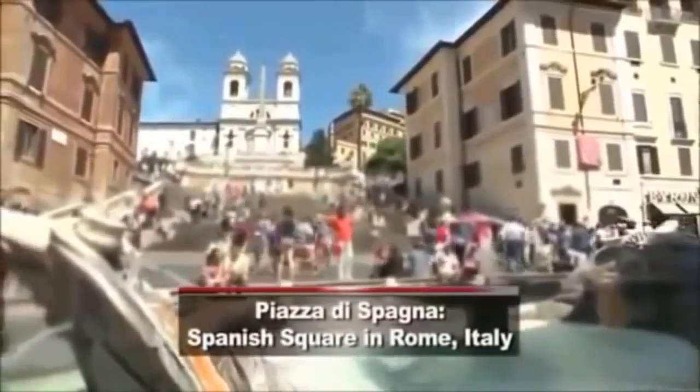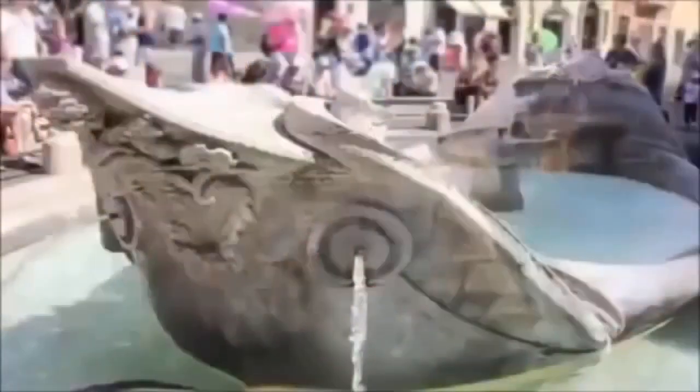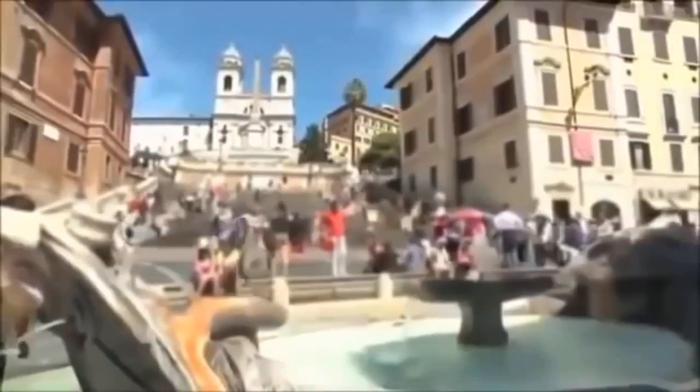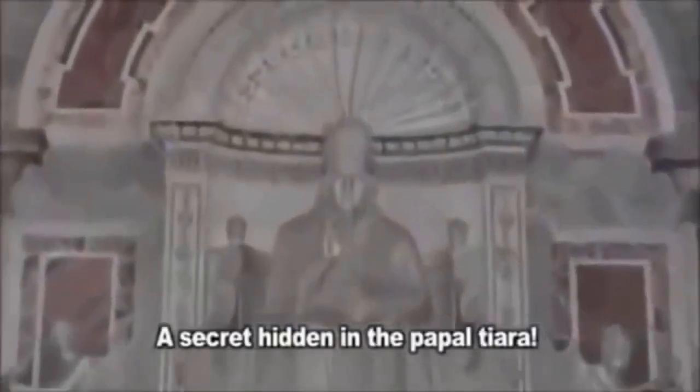Piazza di Spagna, where the movie Roman Holiday was filmed, features the Spanish Steps made famous by Audrey Hepburn. Just below is a boat-shaped fountain, and we can see that the water is running out of a sculpture of the sun. The head of the boat is embellished with the Pope's coat of arms and the papal tiara. The tiara is the symbol of the papacy. The fact that the tiara is at the head of the boat tells us that the Pope is the very person who leads the sun worship.